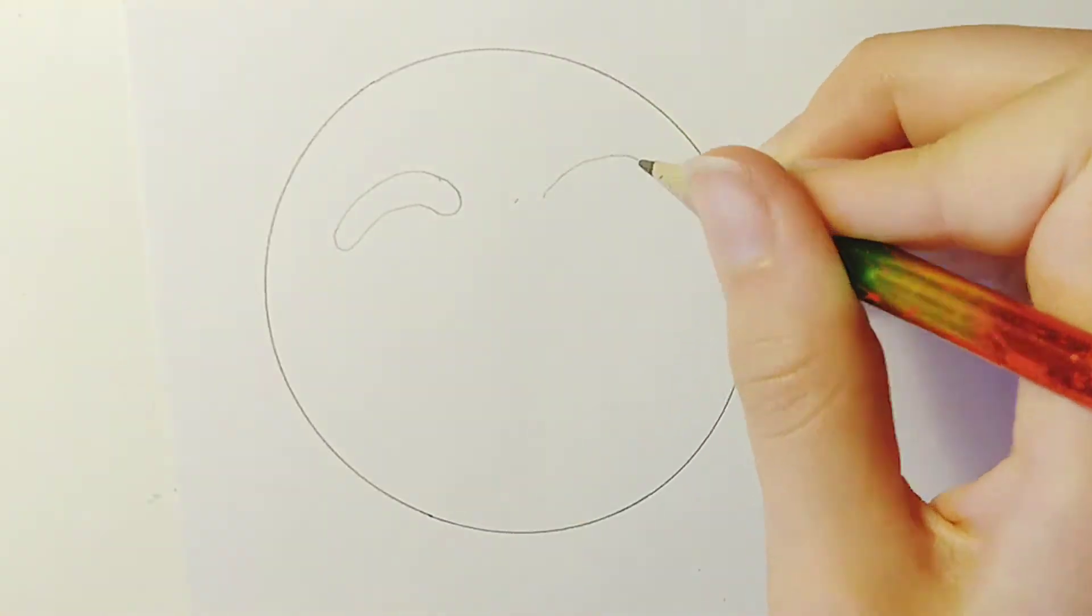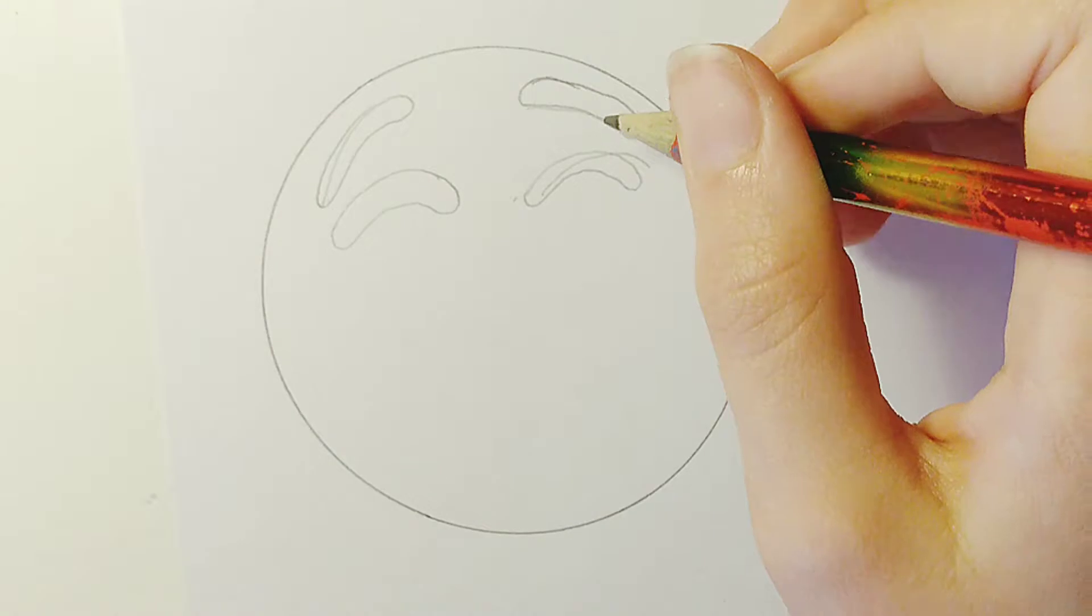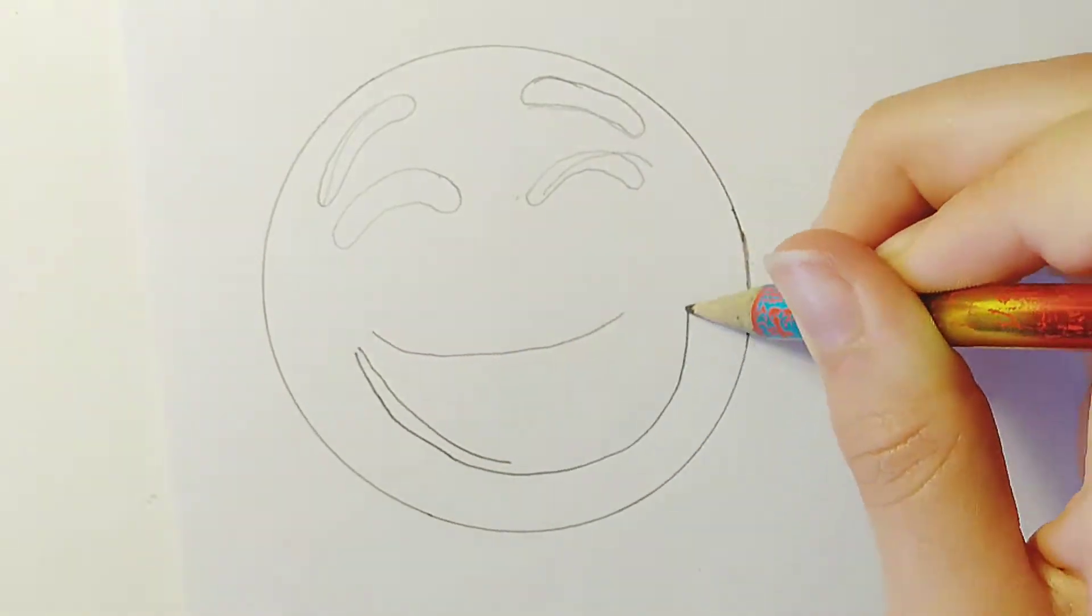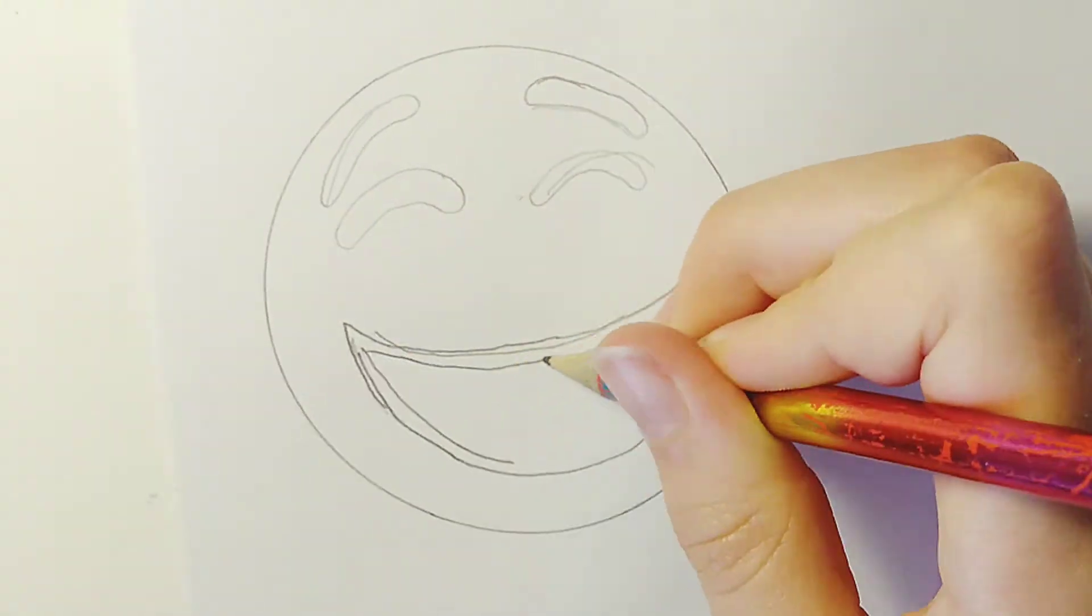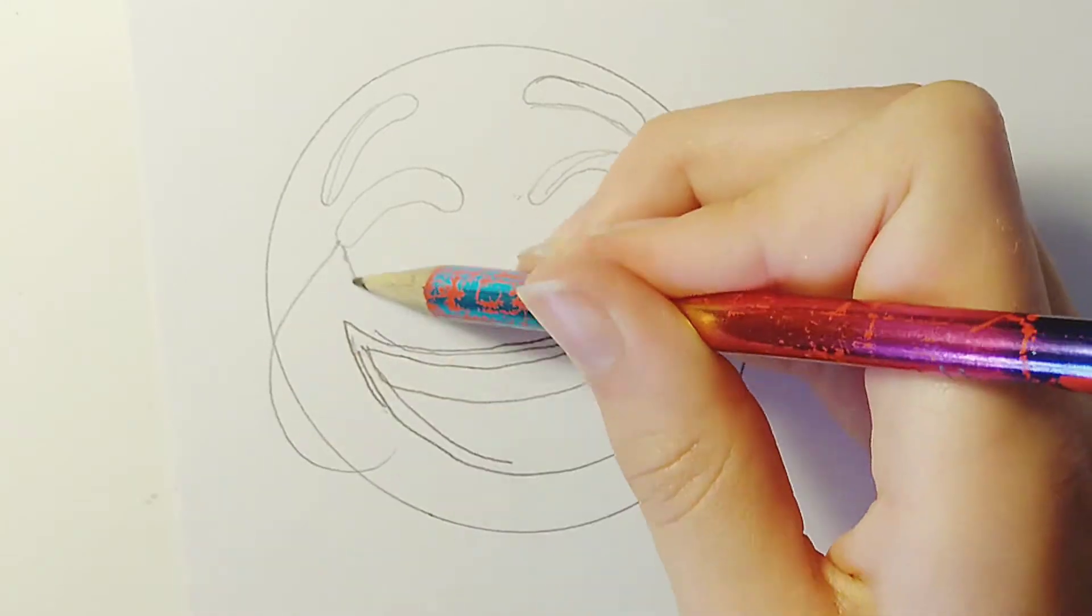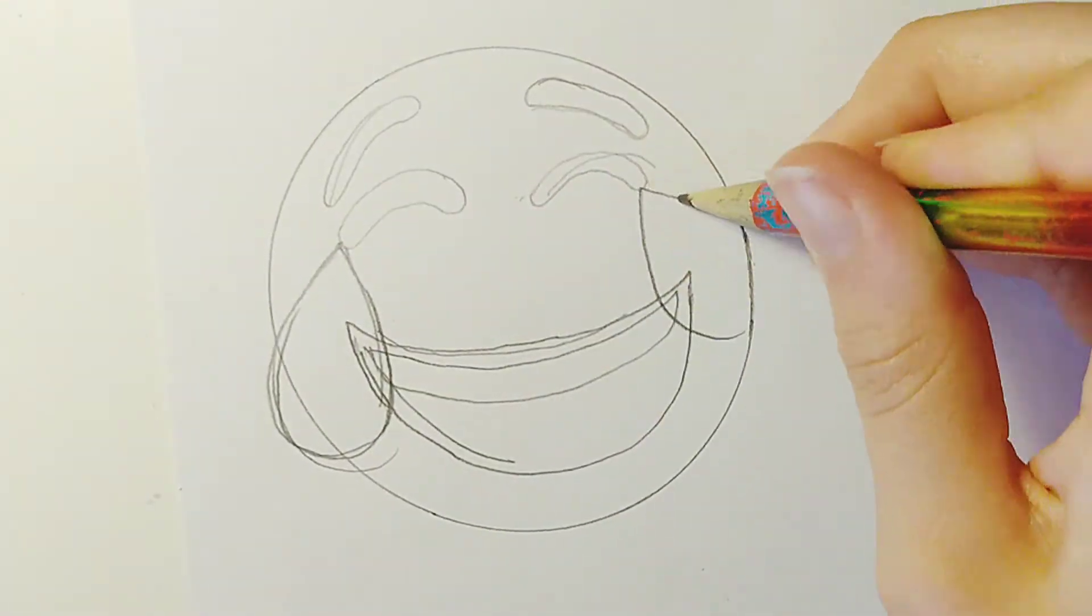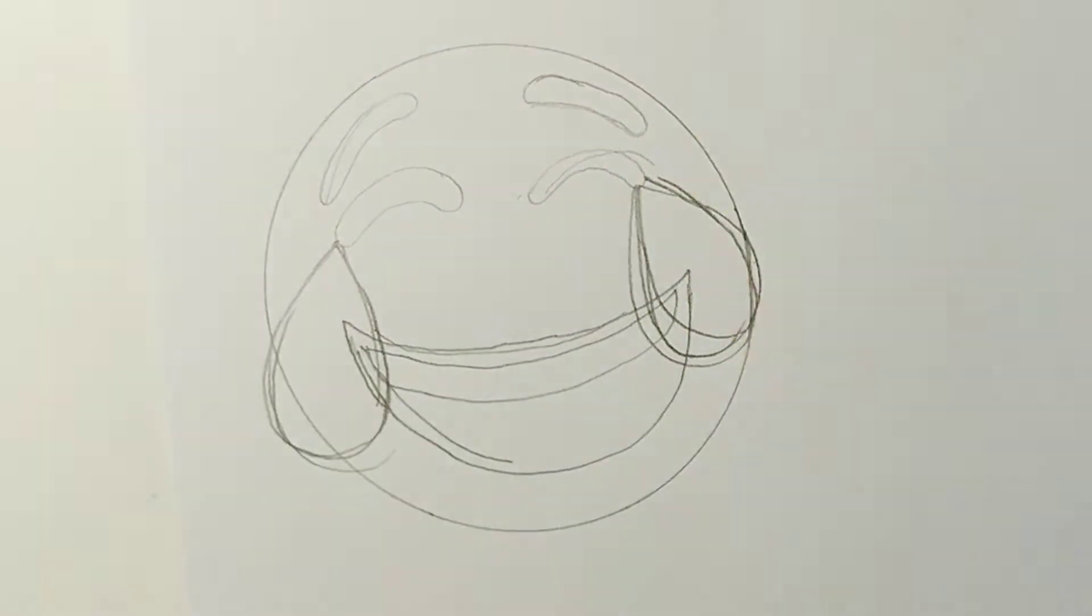We're starting off with the laughing emoji. So first of all we need to draw a circle for the face, round anything. And then we're going to have a big wide mouth and the tears are going to be covering the mouth a bit. So it doesn't matter if the edges aren't perfect.